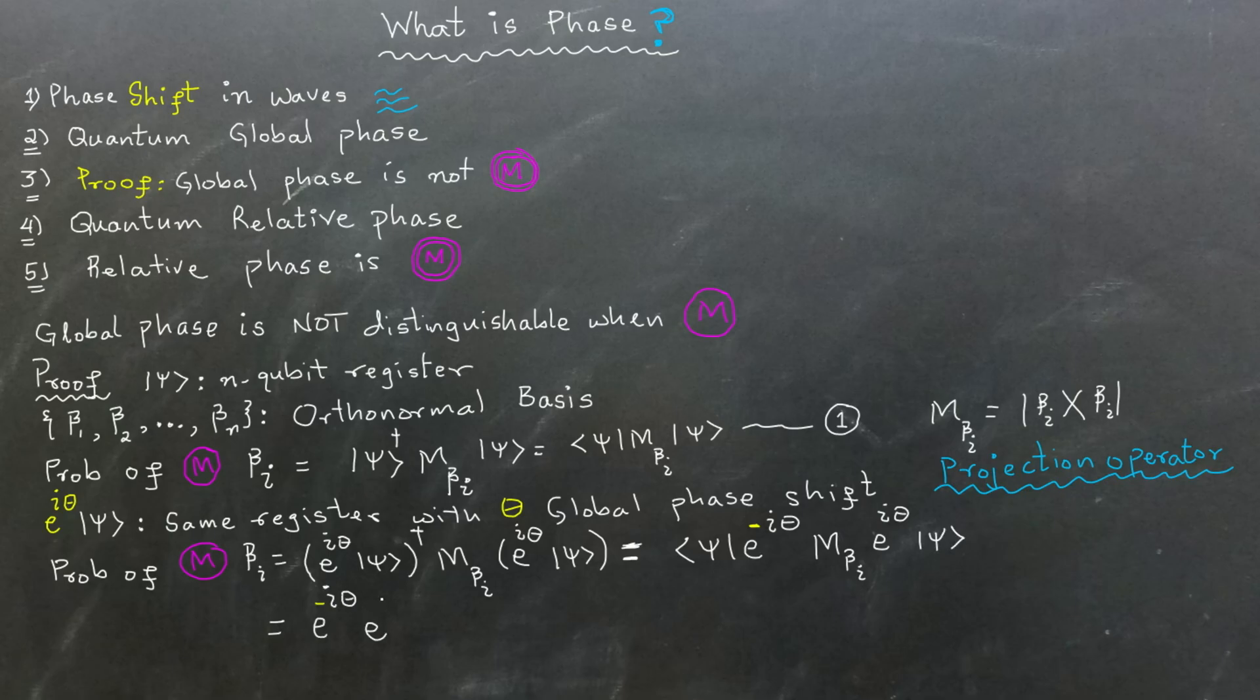We can take out Euler's number raised to the power i theta and its conjugate.